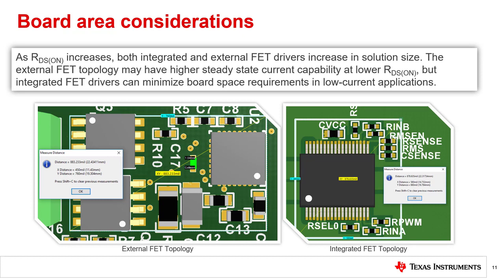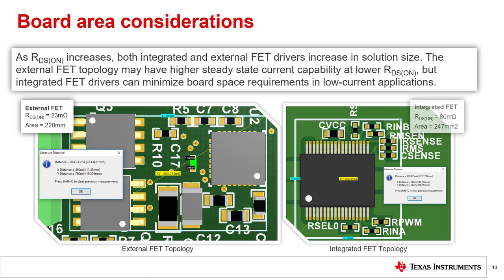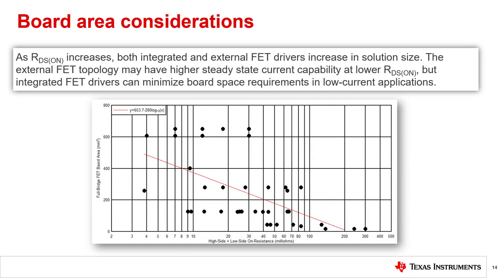To investigate how each driver type utilizes board space, an example external FET gate driver is shown alongside an MCM integrated driver. Both layouts include typical passive components within the white rectangle. The external FETs were selected such that the half-bridge has only 23 milliohms of combined resistance. These FETs have a maximum junction temperature of 175°C and are capable of delivering 9.1 amps of continuous current while keeping below 1.9 watts of power dissipation. The integrated driver has a combined RDS-ON of about 80 milliohms and can only drive about 4 amps of continuous motor current. The gate and integrated driver take up 220 and 247 square millimeters of board space respectively, which suggests that when these implementations occupy similar board space, it is possible for the gate driver to have a higher current capability. This is true because of the availability of lower RDS-ON external FETs.